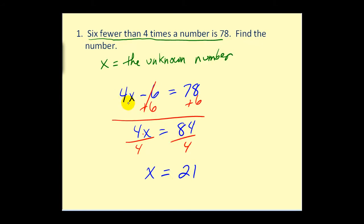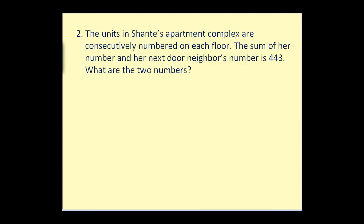And to check this, 4 times 21 would be 84 minus 6 equals 78. And that checks. Moving along.